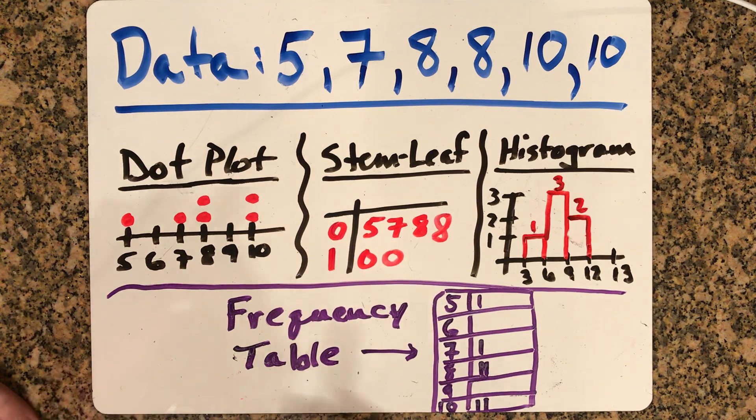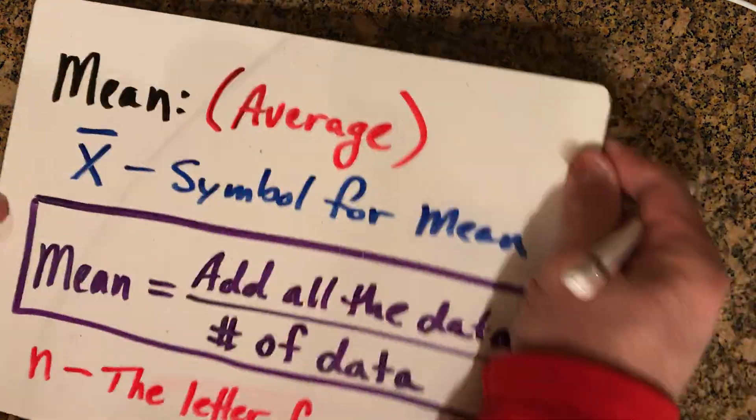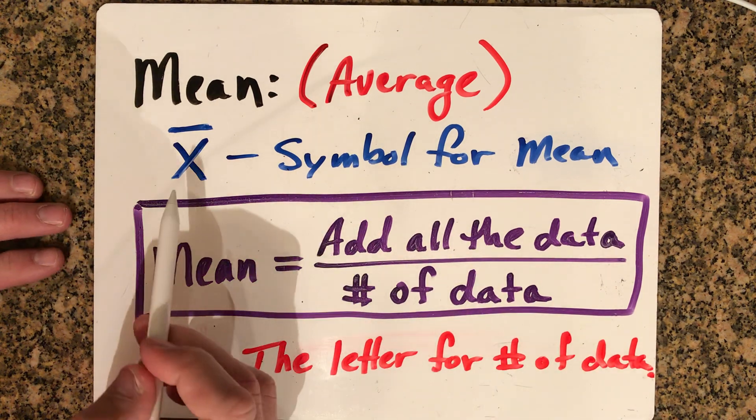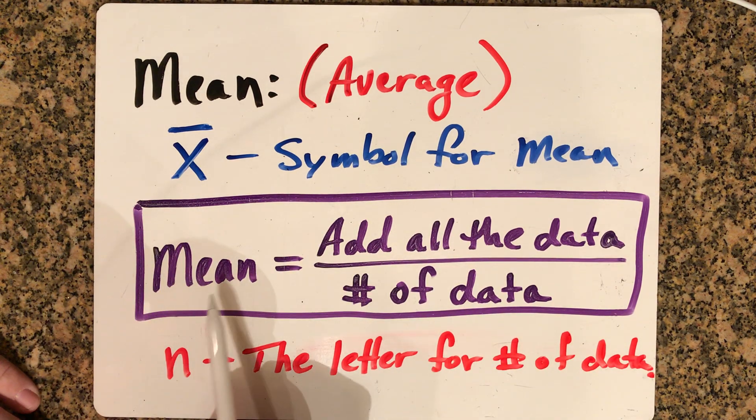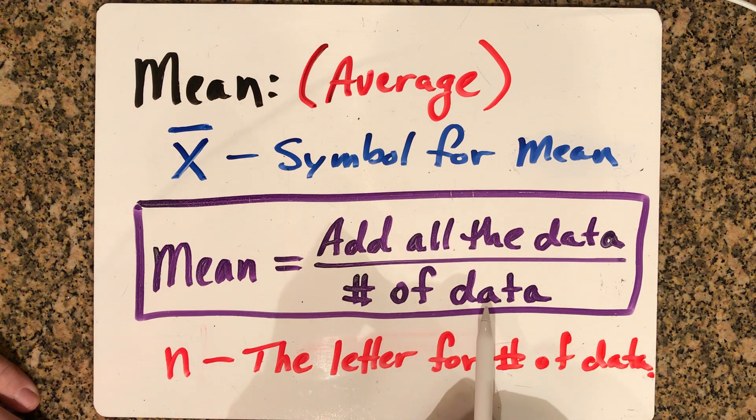To find the mean, median, and mode of these values, we'll talk about each one individually. First, the mean. The mean is the average of the data. The way you find the average, or the mean, is you add up all the data values and then divide by how many there are, or the number of data.